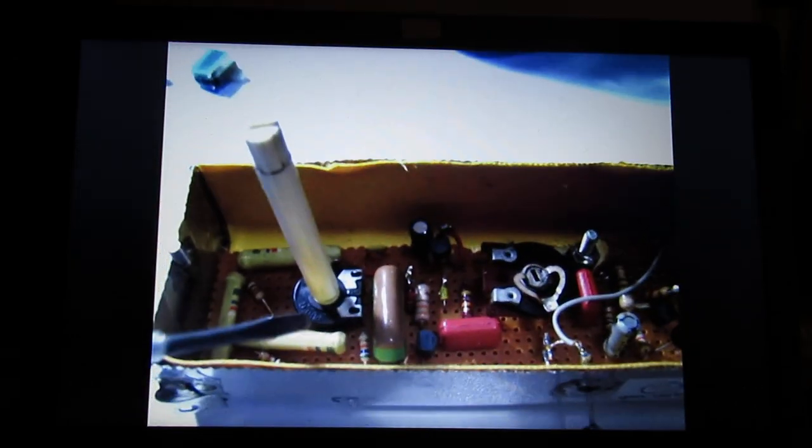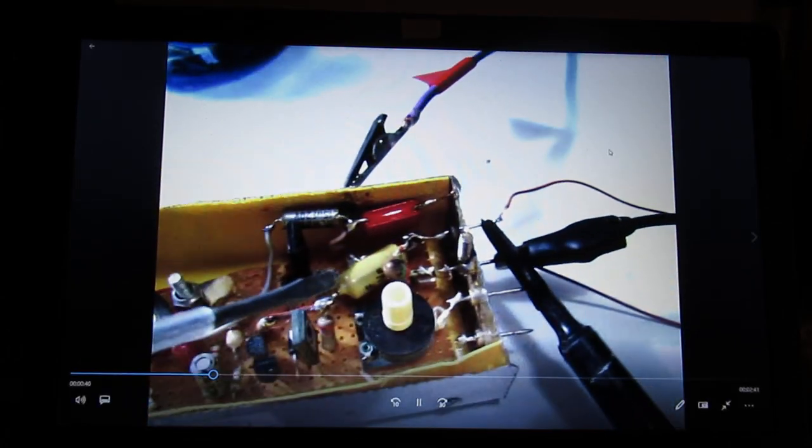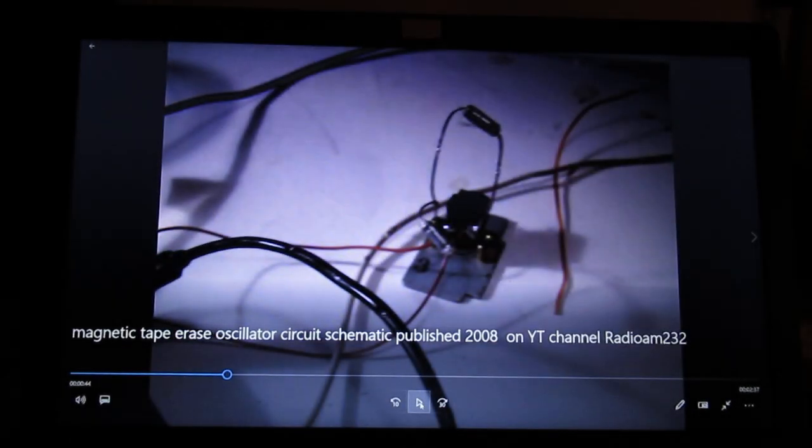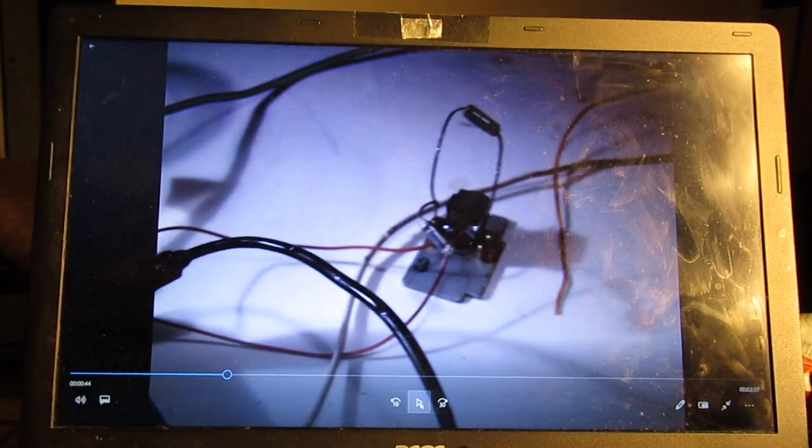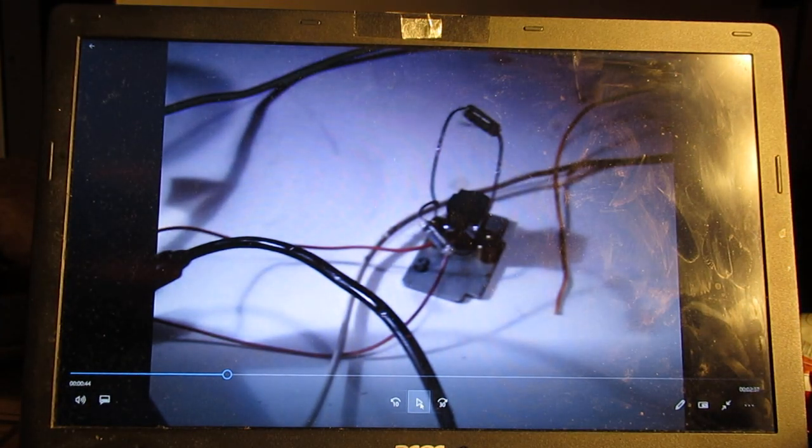This is the schematic I've made. It consists of a sine wave oscillator and here is an amplifier, it's about one watt. You need a quite high AC voltage to erase a magnetic tape.